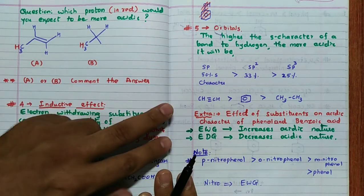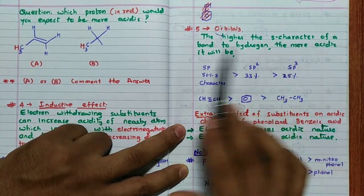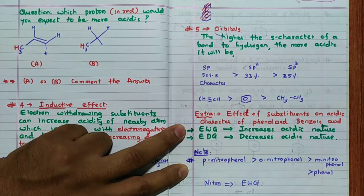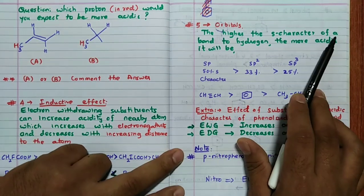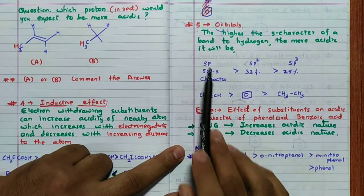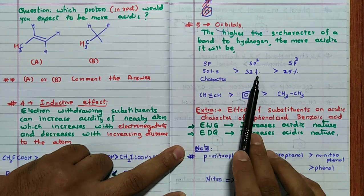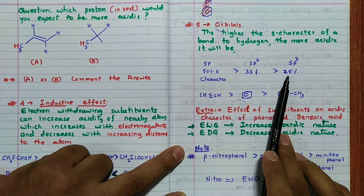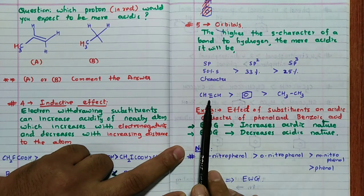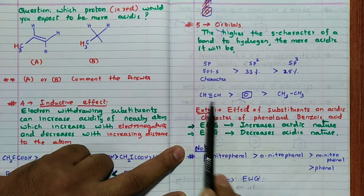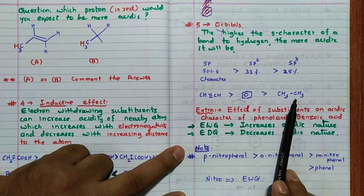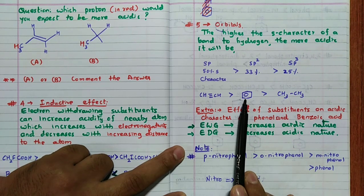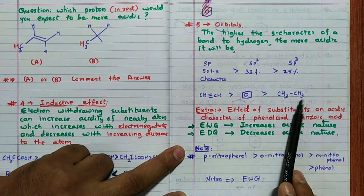The fifth factor is orbitals. Higher the s-character of the orbital forming the bond to hydrogen, the more acidic it will be. SP hybridization is more acidic than SP₂, which is more acidic than SP₃, because the s-character is 50%, 33%, and 25% respectively. So an alkyne (ethyne) is more acidic than benzene (SP₂), and benzene is more acidic than ethane (SP₃).